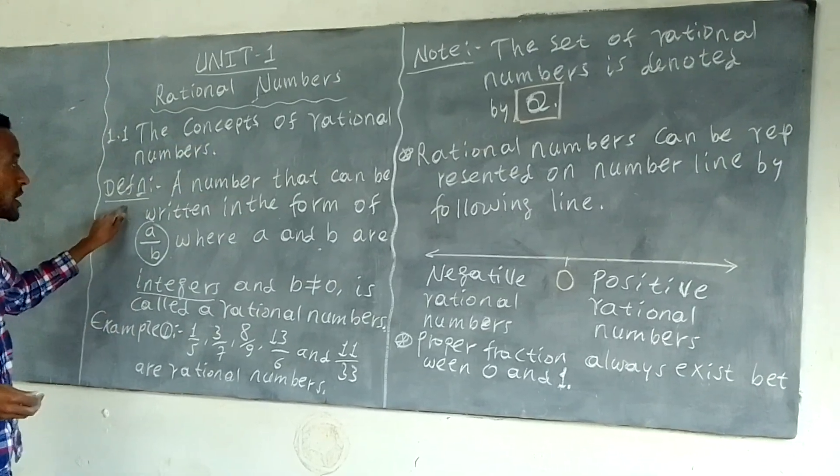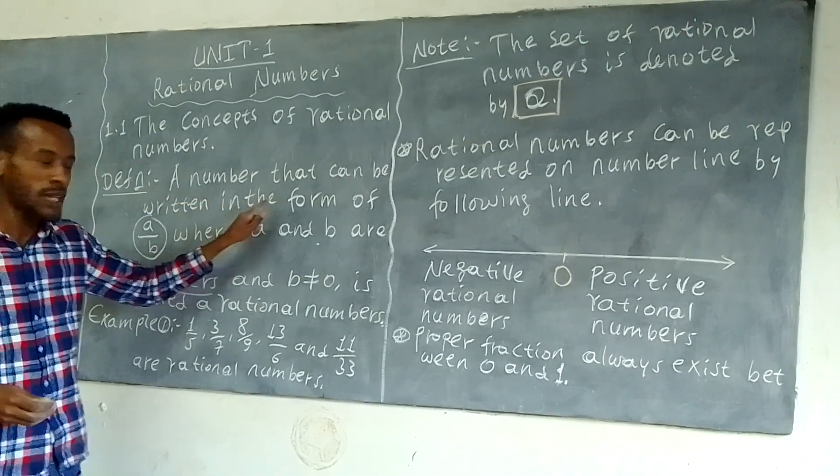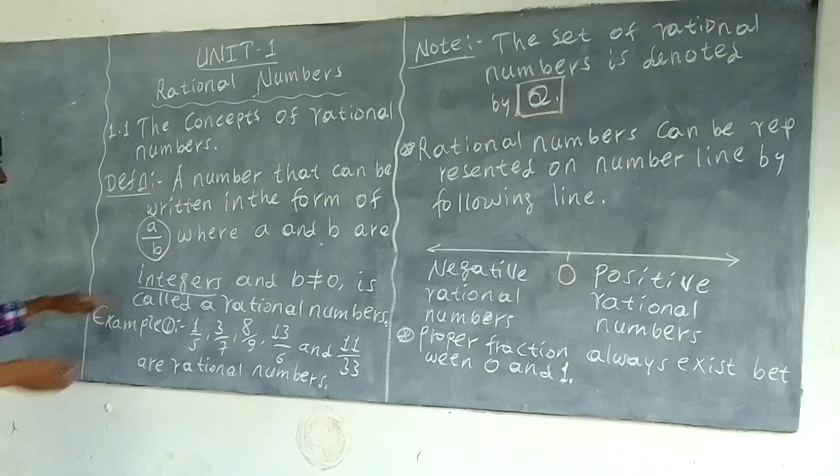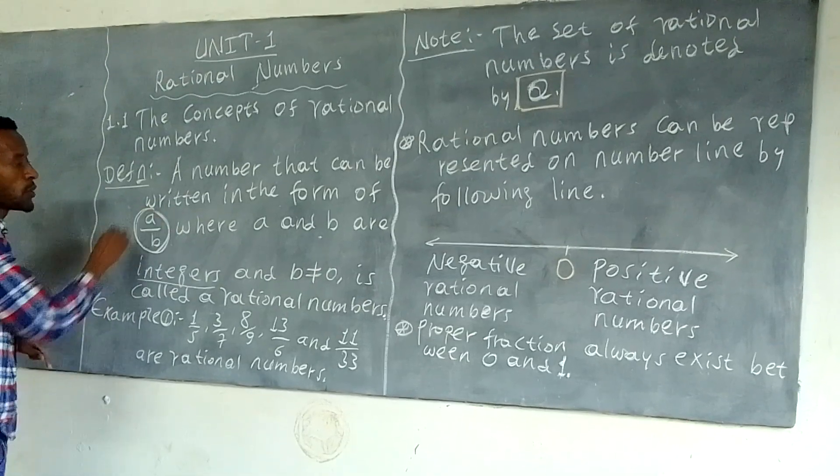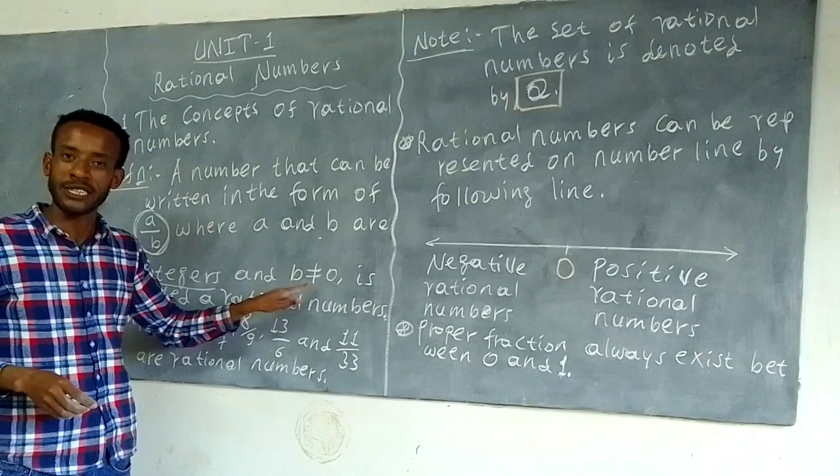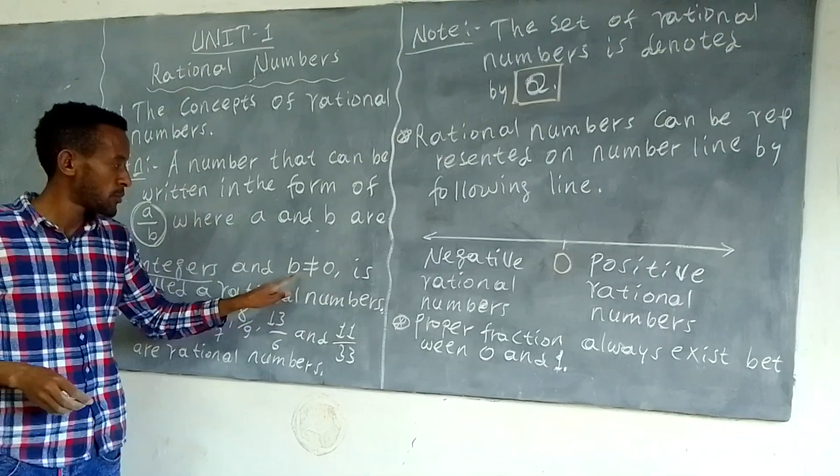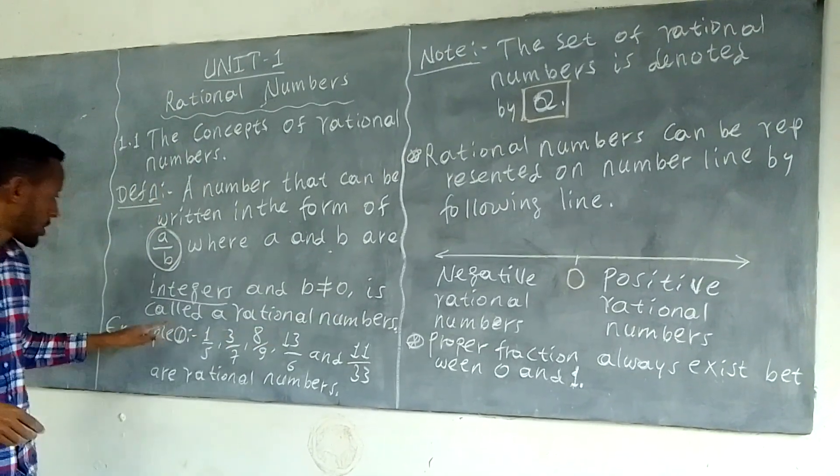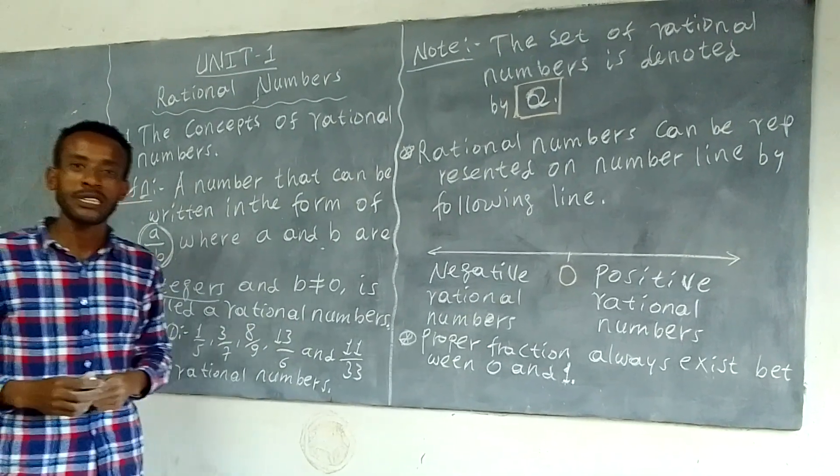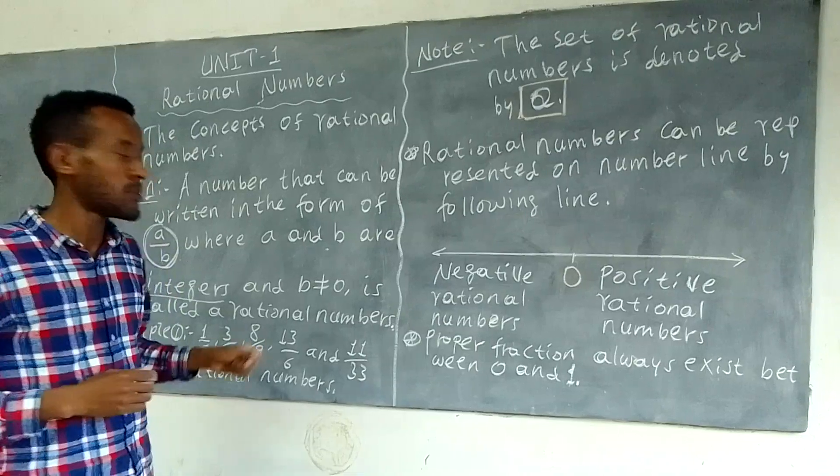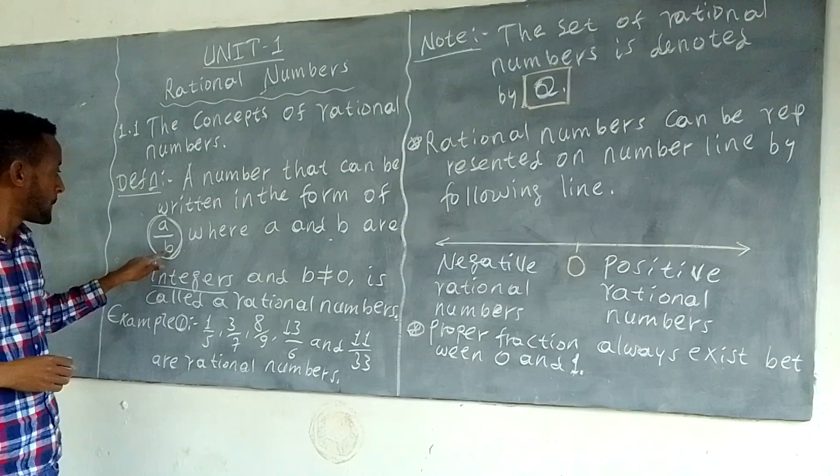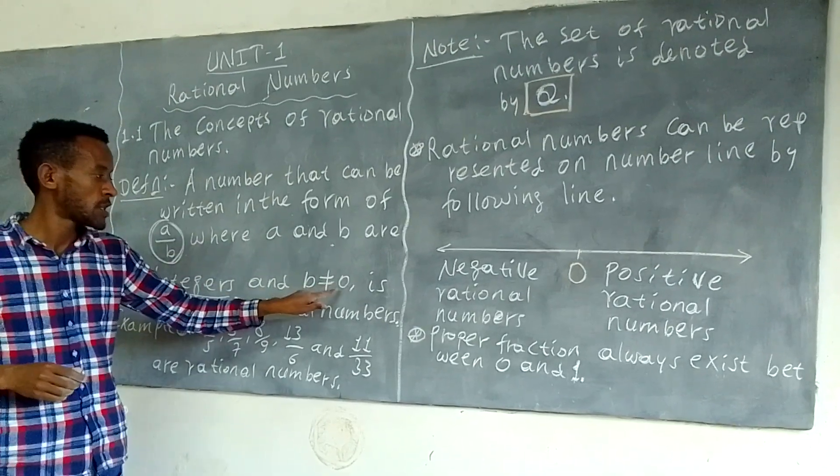A number that can be written in the form of a over b, where a and b are integers and b is different from 0, or b is not equal to 0, is called a rational number. So a over b is a rational number where b cannot equal 0.